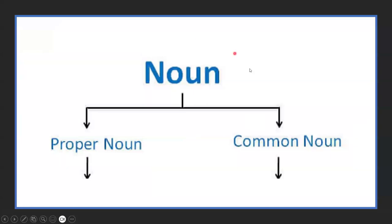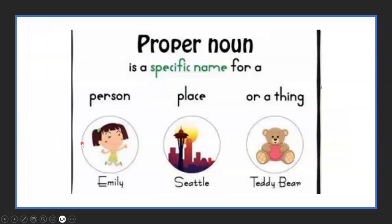Now let us speak about the kinds of noun. We have two kinds of noun: proper noun and common noun. Let us learn what is the meaning of proper noun. Proper noun is a specific name.